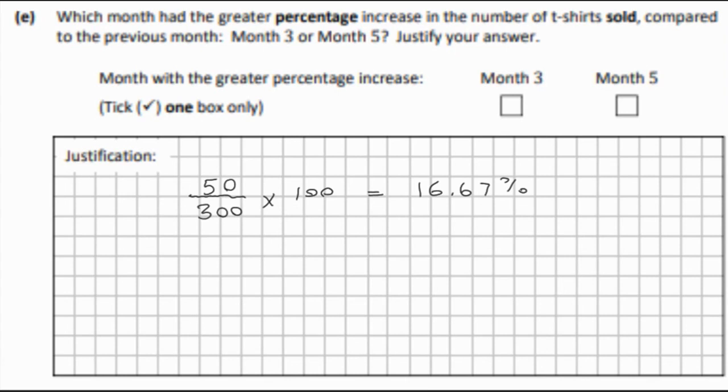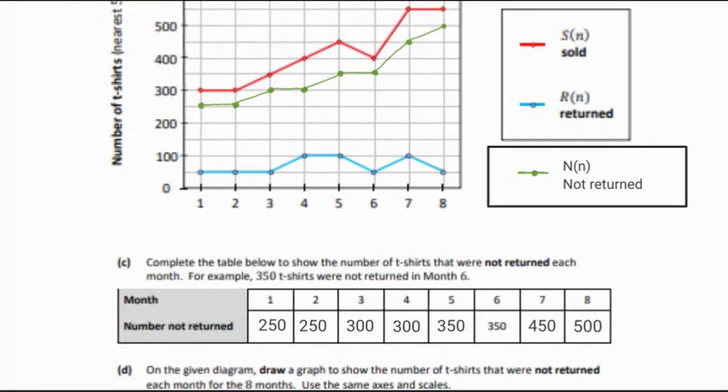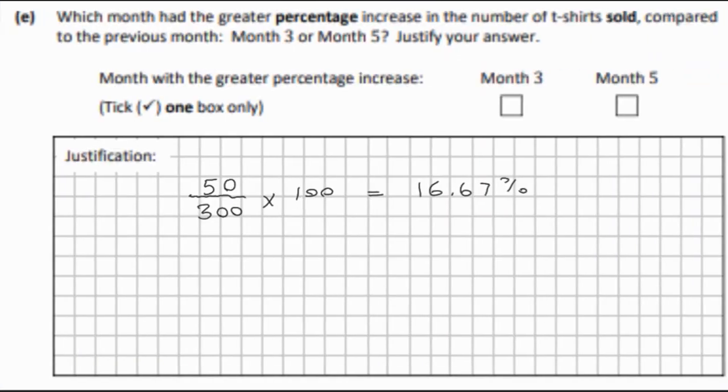If we go to Month 5, you can see from Month 4 to 5 we have an increase of 50 again, as it goes from 400 to 450. But in this case, it will be the difference of 50 over the Month 4 value, which is 400. This will make a difference on the percentage increase.